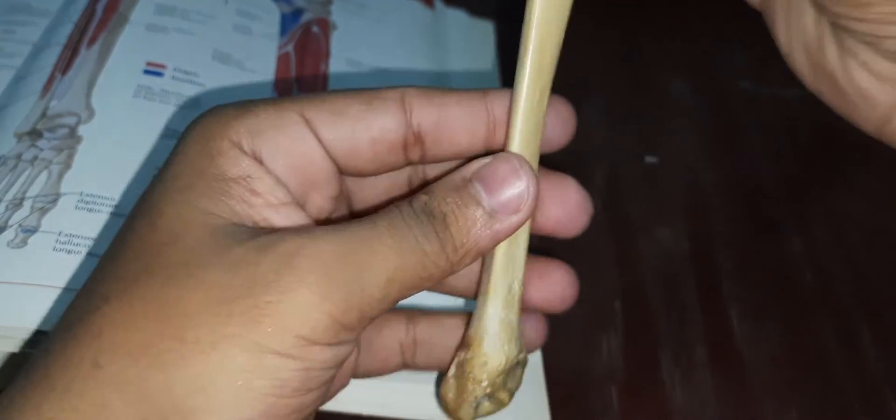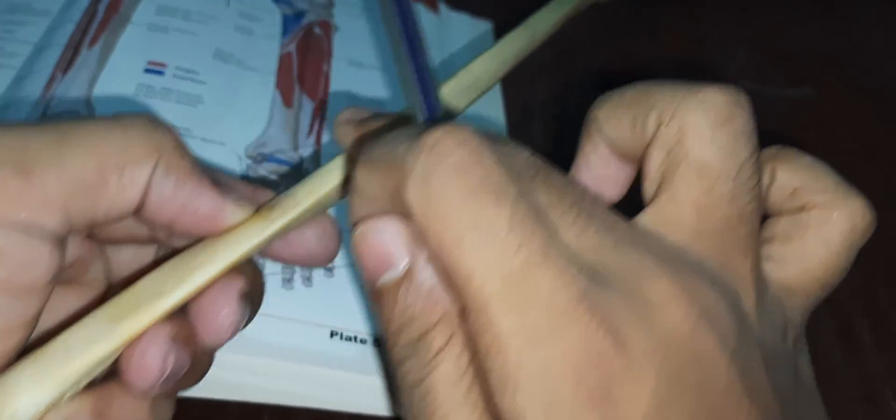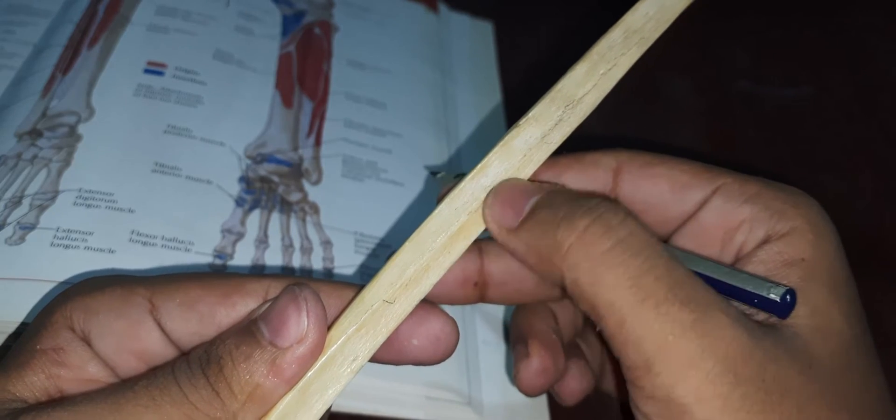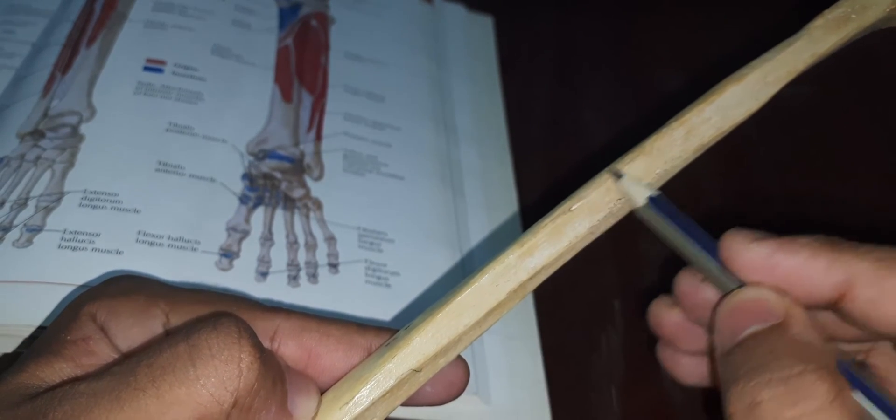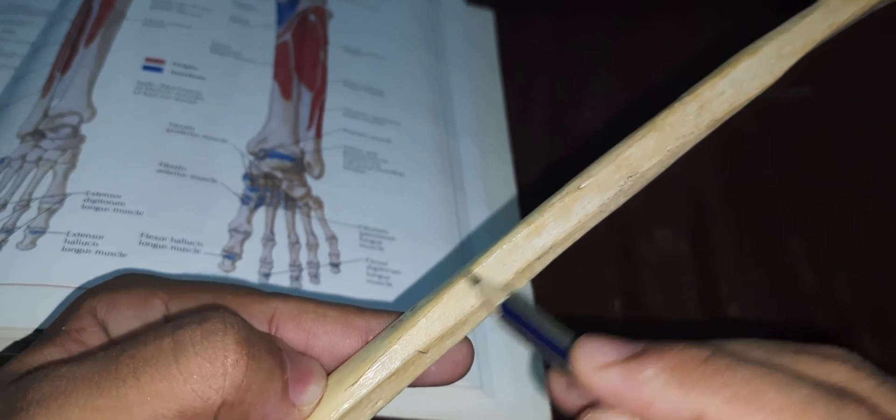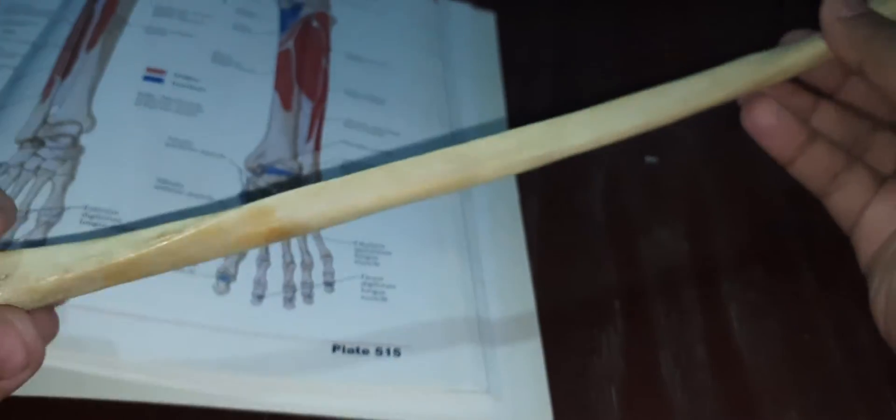If you have to see the posterior border, the posterior border is just in this position. Medial crest - this is the medial crest. Medial crest is the line of the anterior border. Medial crest is sharp on the middle portion. The anterior border and medial crest are connected.